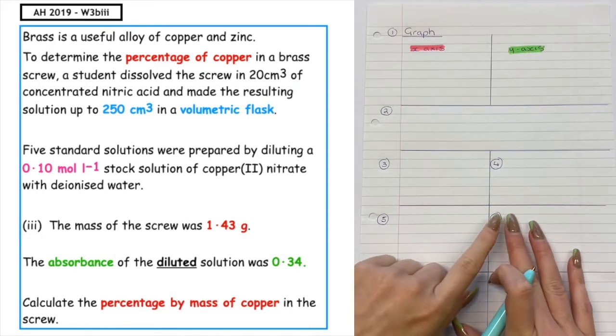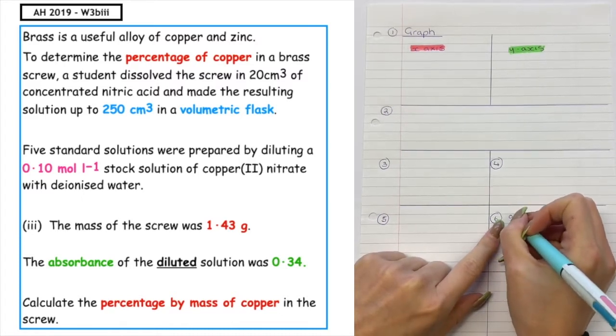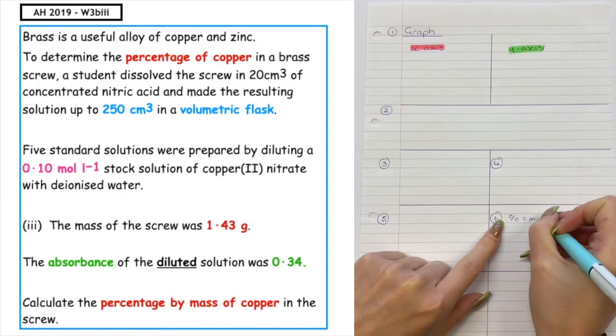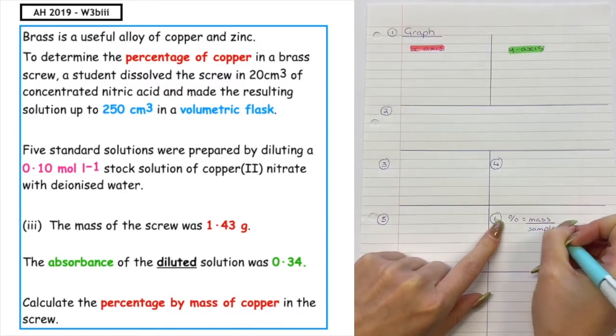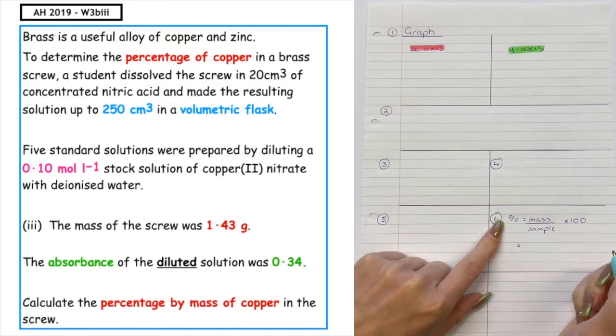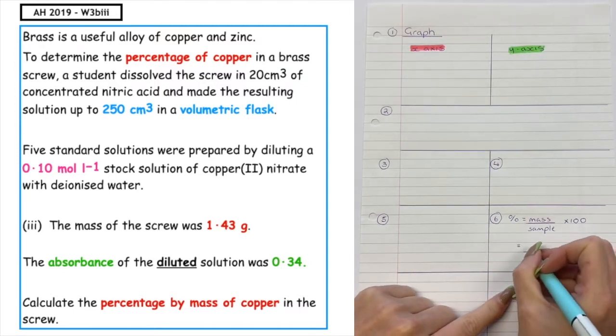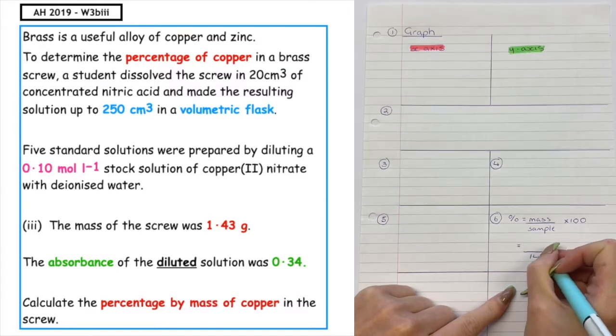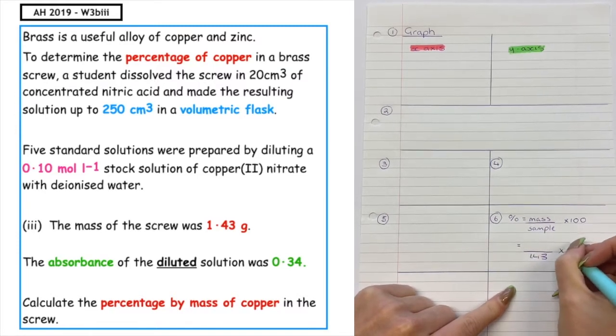So at the final step, which is step six, we're going to write percentage equals mass over sample times by 100. We should always be able to find one piece of information in the text, and we can see that the mass of the screw was given as 1.43. So that is the sample size, times by 100.